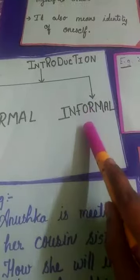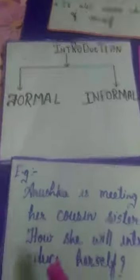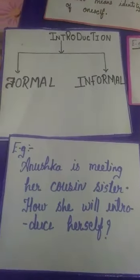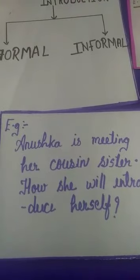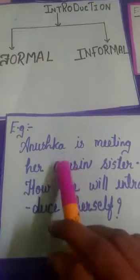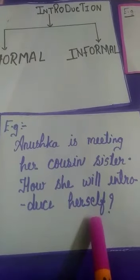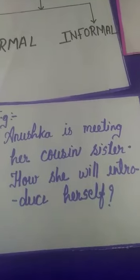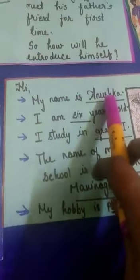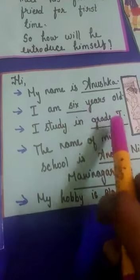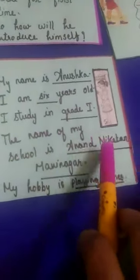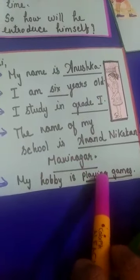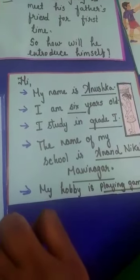Another type is informal introduction. What is informal introduction? Informal introduction is introducing yourself to a person whom you know. For example, Anushka is meeting her cousin sister after a long time, so she has to introduce herself. Here is how: Hi, my name is Anushka. I am six years old. I study in grade one. The name of my school is Anan Nikhetan Maninagar. My hobby is playing games.